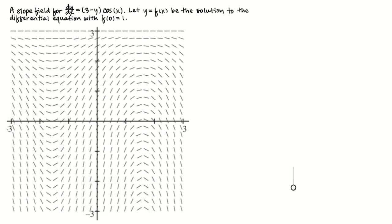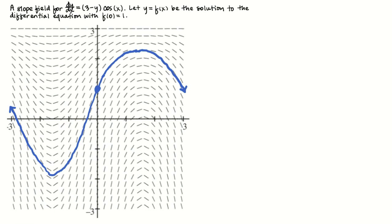So suppose we've got a differential equation and we've got a slope field for it. We've already looked at how to sketch a solution curve, so I'm going to sketch the graph of f, which is the solution to the differential equation that goes through the point (0, 1). I'll start with that point and follow along. It doesn't have to be a masterpiece — it just has to extend to the edges of the slope field and not have any flagrant contradictions to the slope field tick marks. So that's the graph of f.